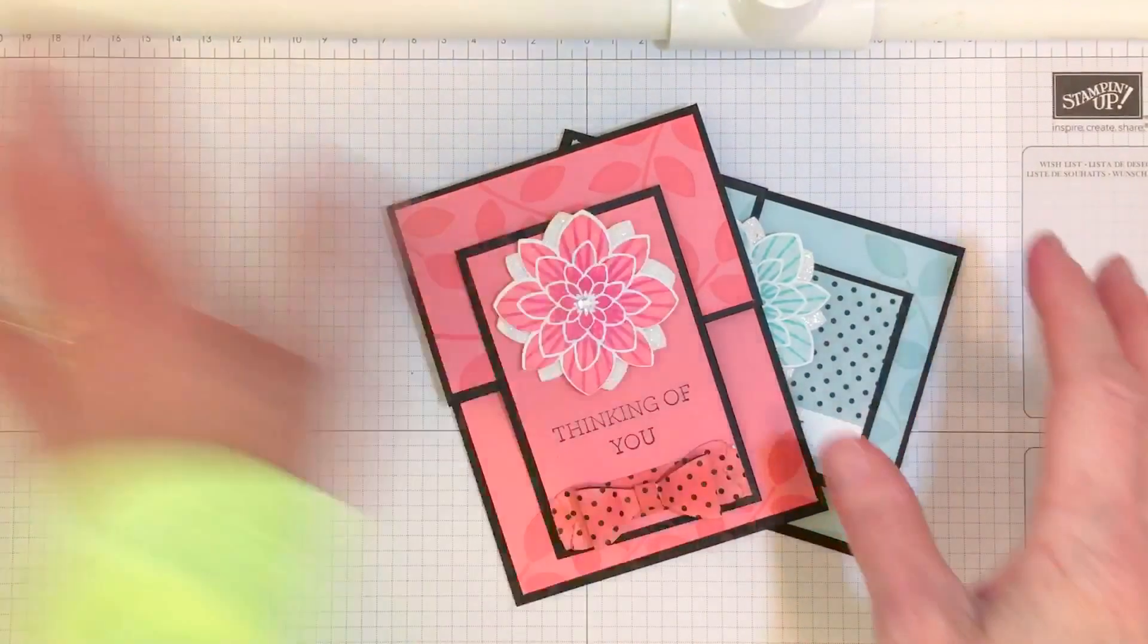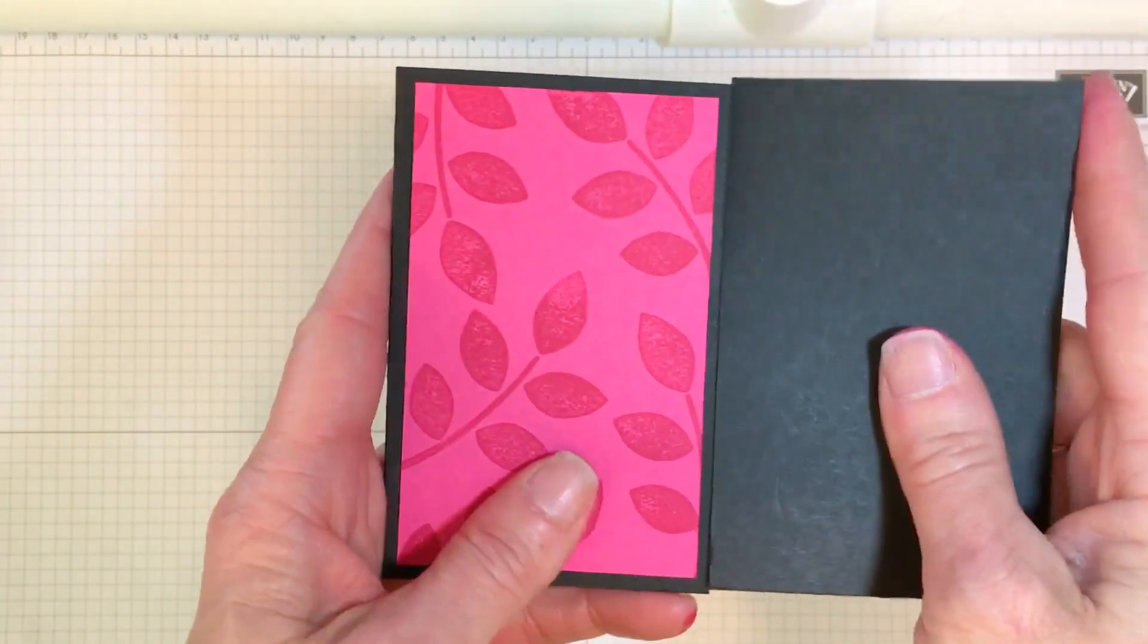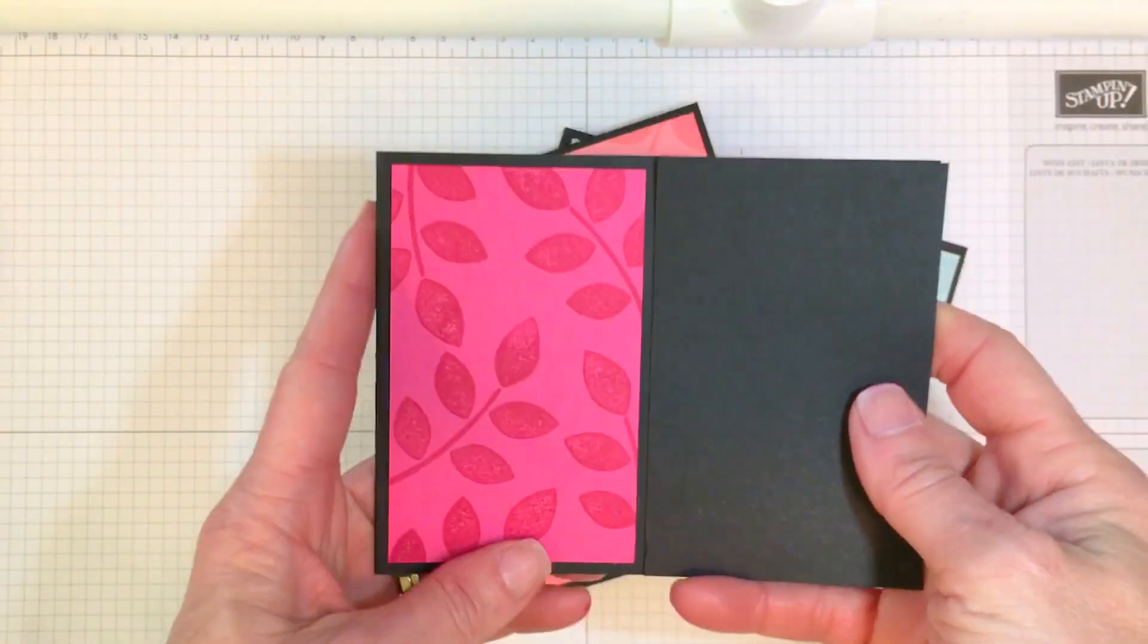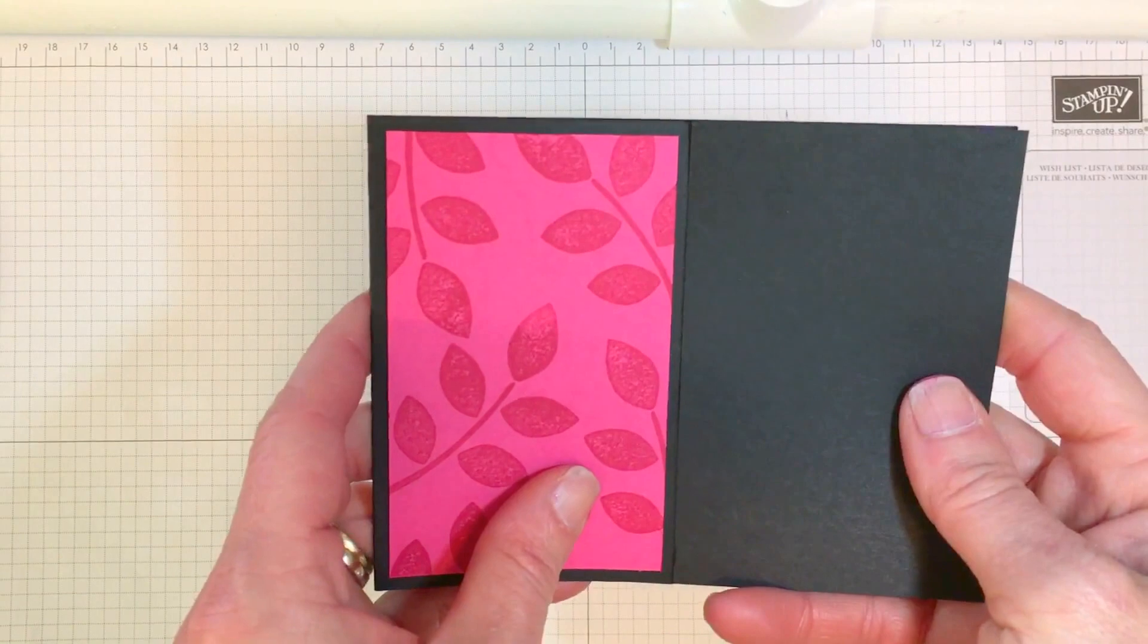For time purposes, I've already started my card, and I wanted to share with you quickly the measurements. It's 4 1⁄4 by 11, and you're going to score it at 5 1⁄2.